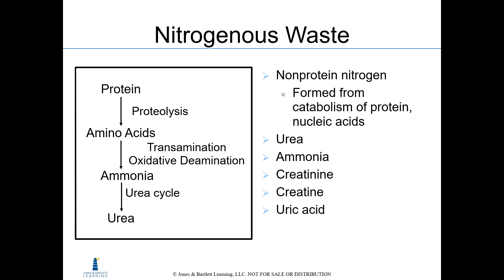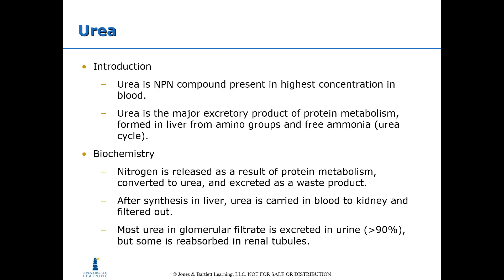Looking at this breakdown, proteins are broken down into amino acids through the process of proteolysis — 'proteo' refers to protein, 'lysis' means to cut up. Amino acids are further broken down by removing the amine group; transamination and oxidative deamination are two different methods for doing so. When amino acids lose their amine group, that amine group is converted into ammonia, which travels through the blood to the liver to enter the urea cycle.